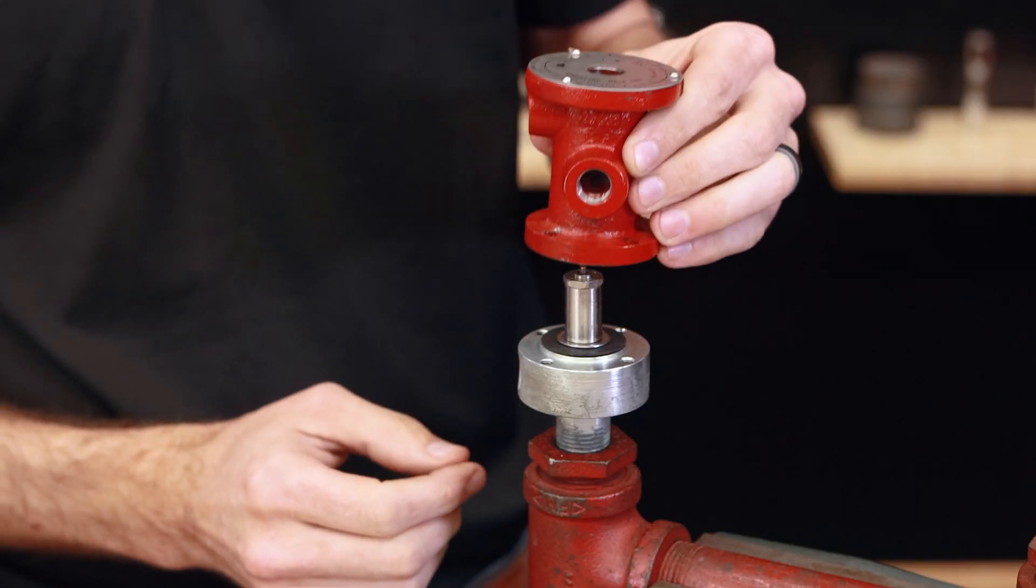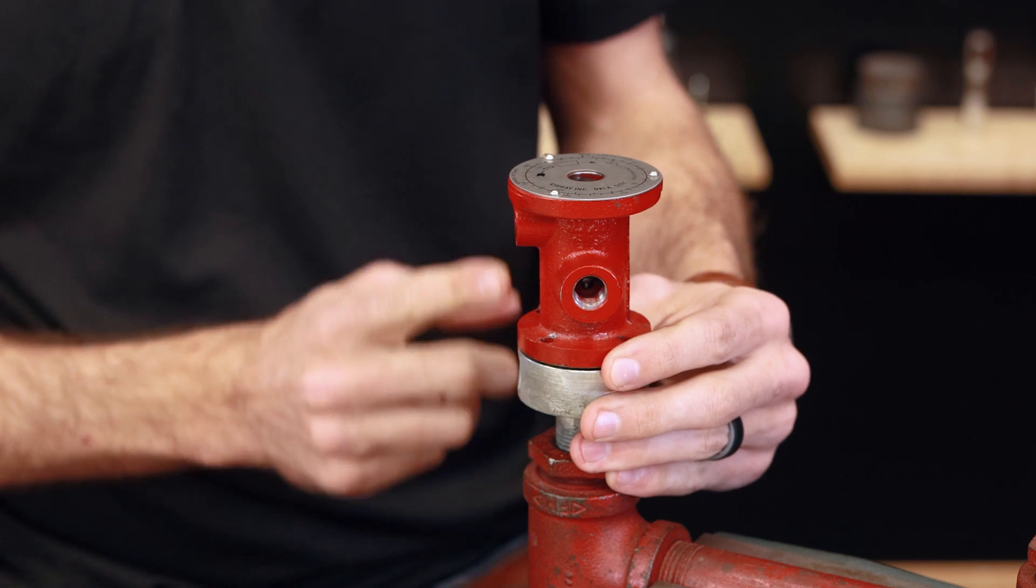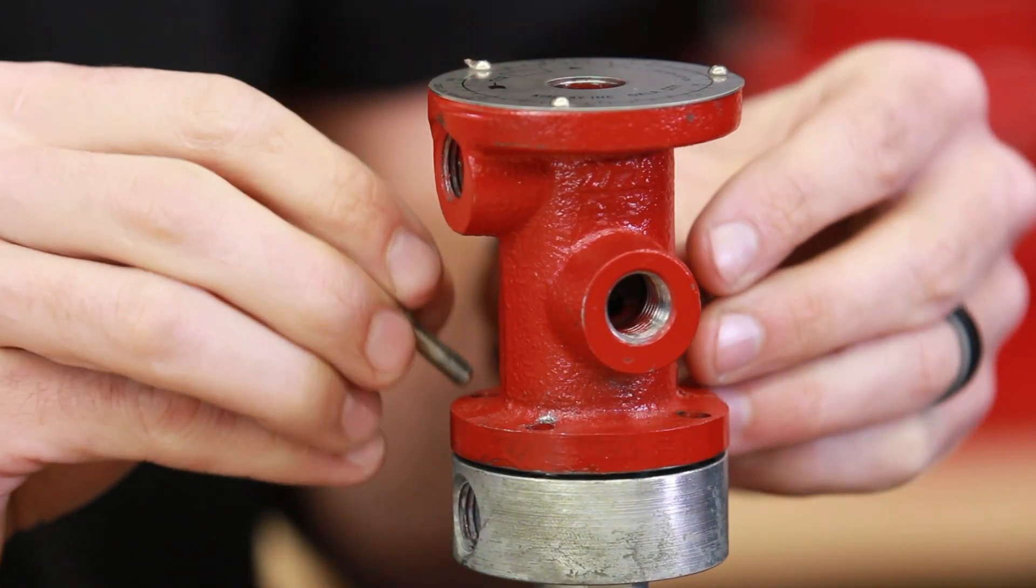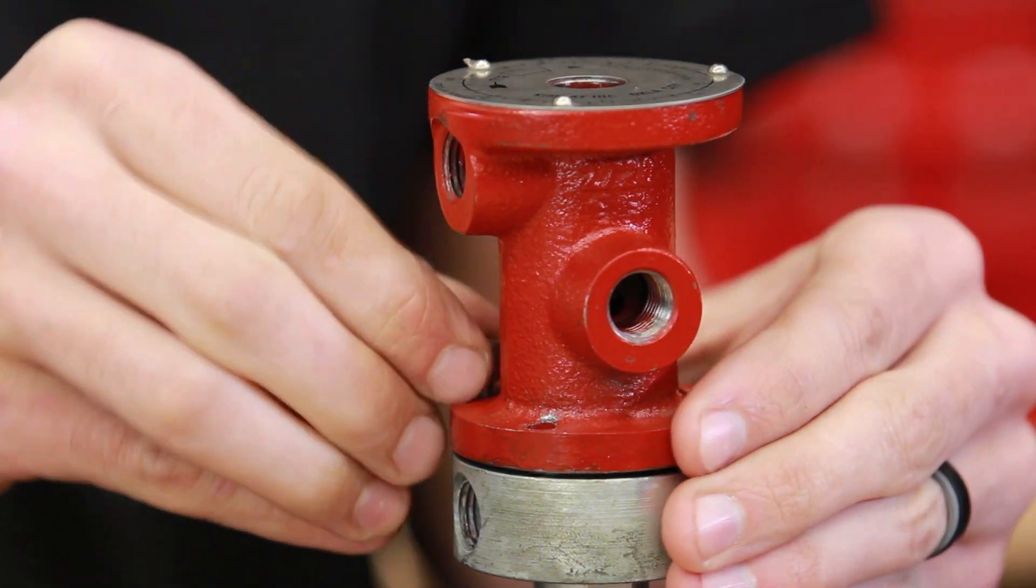Place the bonnet on top of the base, turn so that the uppermost port is aligned with the connection port on the base. Insert the bolts and tighten with the 5/32 hex key.